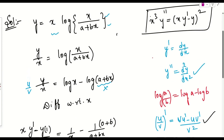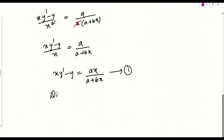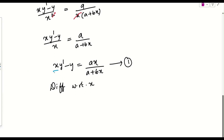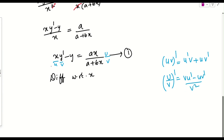Since we need to prove something involving the second derivative, we differentiate Equation 1 again with respect to x. The left side: differentiate xy' − y using the product rule on xy': derivative of x is 1 times y' plus x times y'' (second derivative), minus derivative of y which is y'. So the left side becomes y' + xy'' − y'.